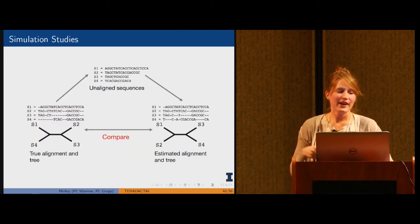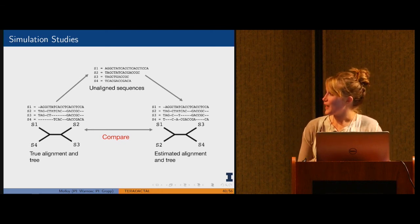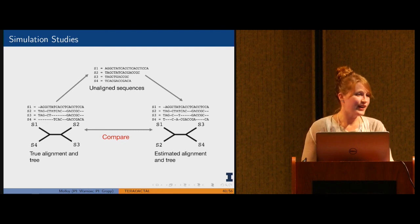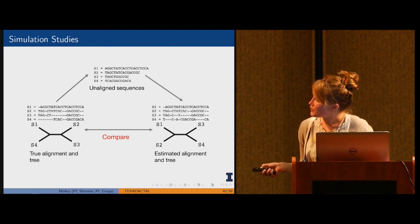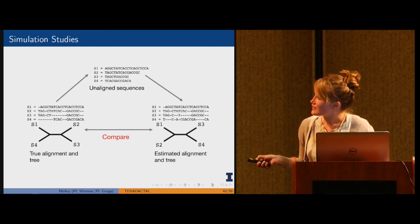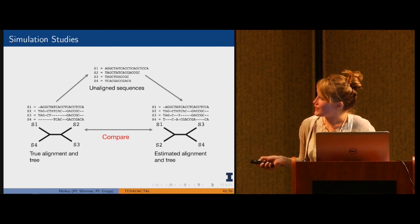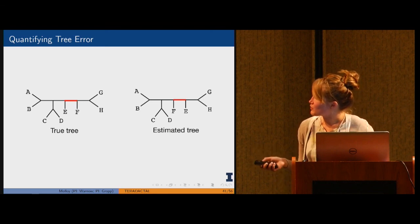Now we have this approach with all of these desirable features, but the question is, is this approach any good? By performance, biologists would care about the accuracy of the tree that you recover. Typically what's done here are simulation studies, so we have this true alignment and the true tree, we delete all the gaps from the alignment to get unaligned sequences, and then we could run pterodactyl to get a tree. In summary, we're going to compare the estimated tree to the true tree and ask how well did our method perform. In terms of quantifying tree error, we're looking at the false branches of the tree.